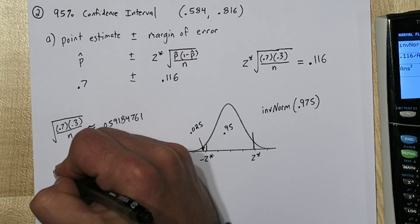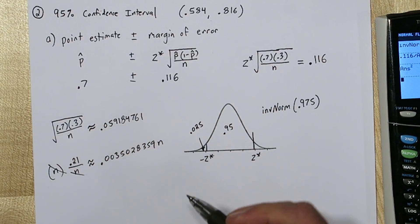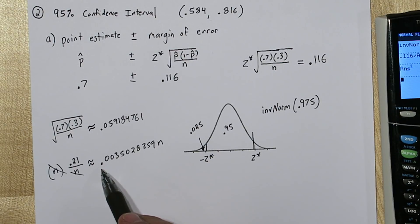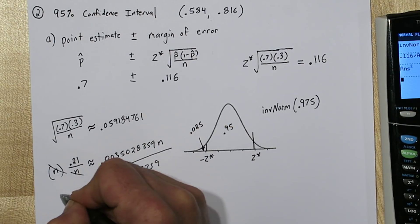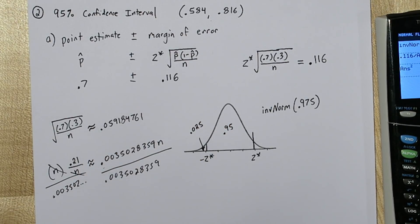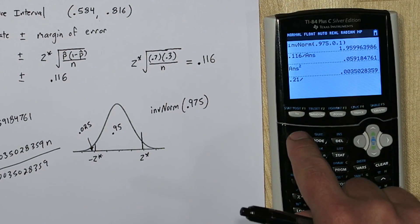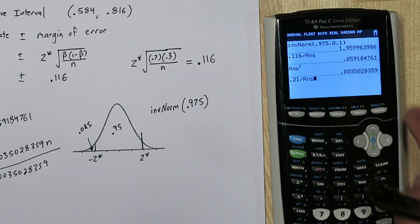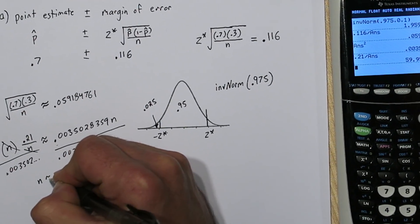Now some students actually have a little trouble with the algebra in the next step. What I'm going to do is multiply both sides by n. So if I multiply this side by n, these n's cancel out. So now we have this really small number times n equals 0.21. So the next step would be to divide both sides by this really small number. That will isolate n and we'll actually have our answer. So I'm just going to type 0.21 divided by the value we already have on there.